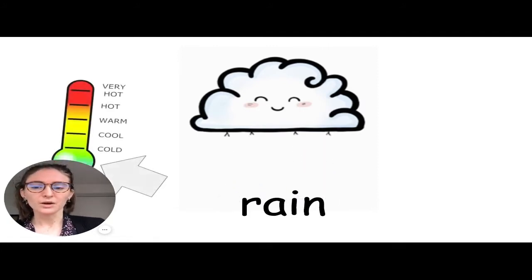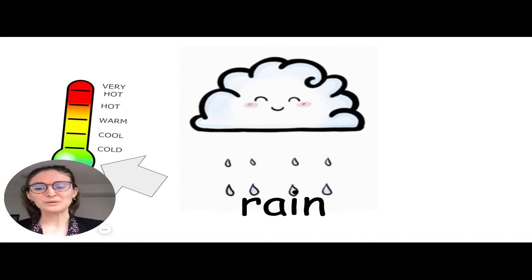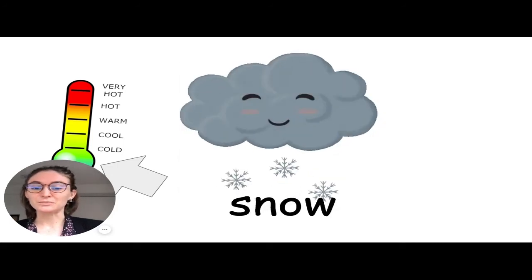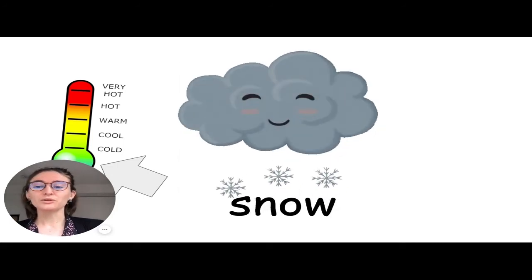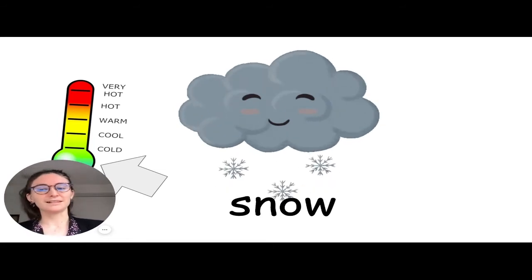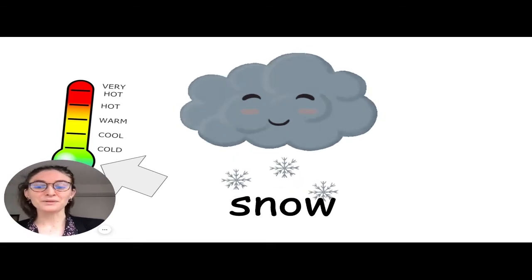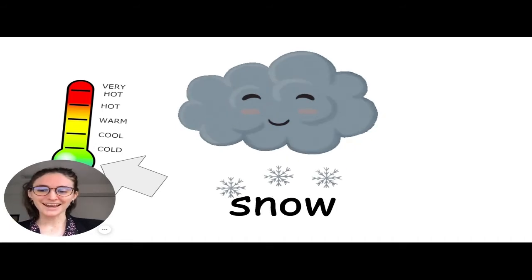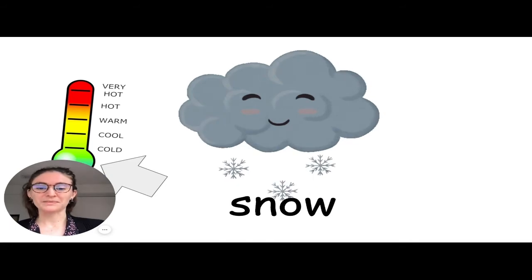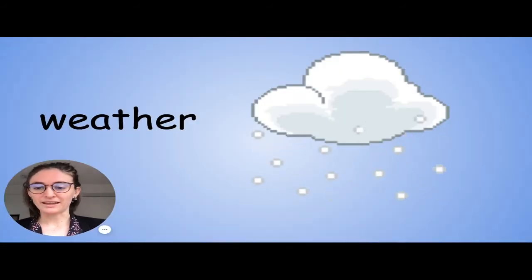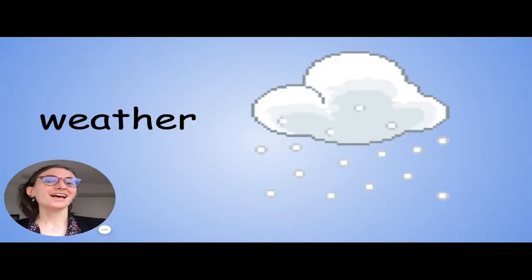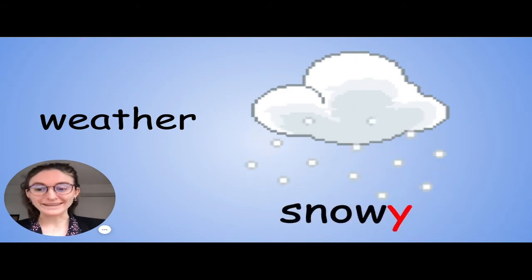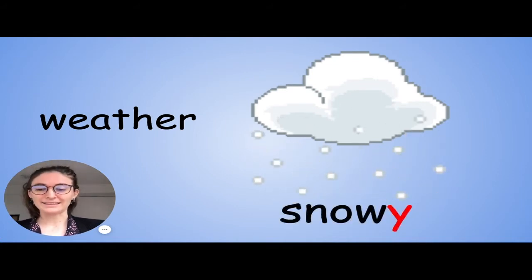Class 102, what happens when it starts to get a little cold? It's not going to be rain — it's going to be snow. So when the weather is cold outside, usually we can see snow. This doesn't happen a lot in Taipei, but in Canada, when it's cold, it snows. And you can also say the weather is snowy, with a Y at the end.